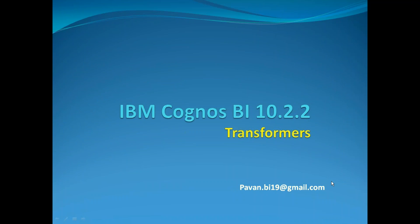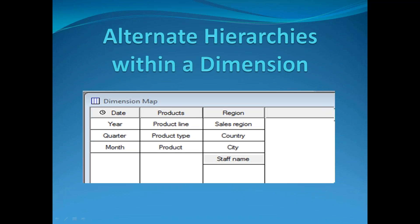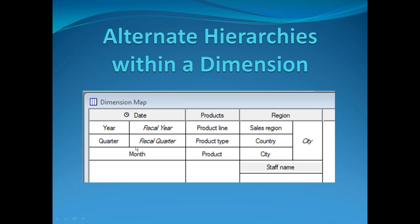Thanks for joining. My name is Pavan. Today we'll talk about the Transformer's Alternative Drill Down. Alternative drill down is another way to explore data where it provides direct navigation to lower levels to view the broader scope of data. You can reorganize the data or create new levels.